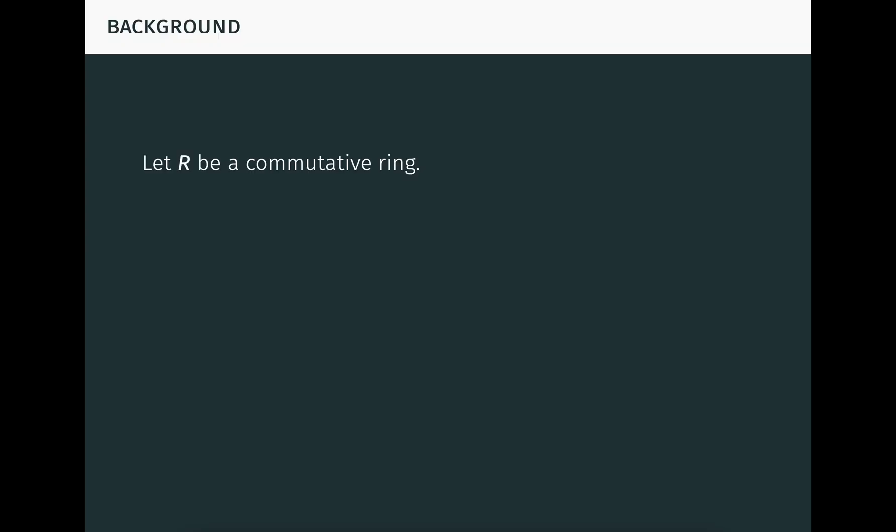Let R be a commutative ring with unit. If you want, you can just take R to be a field like the real or complex numbers. Let A be an n by n matrix over R.